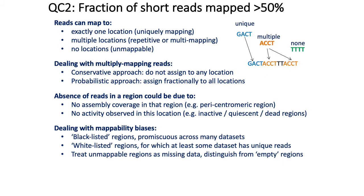A useful QC metric for ChIP-seq assays is to calculate the fraction of short reads that you were able to uniquely map to the genome, and this fraction should hopefully be more than 50%. When you perform a ChIP-seq assay and try to align reads to the genome, one outcome is a uniquely mapped read — a read where there is only one location on the genome that gives an exact match, so you know where that read came from with no further problems.